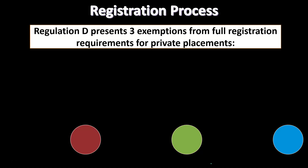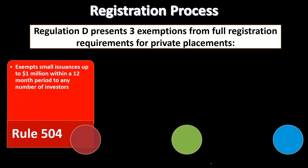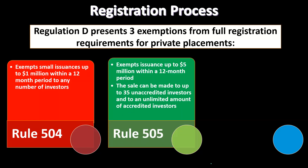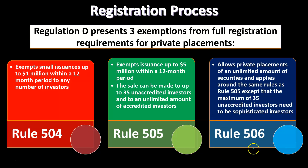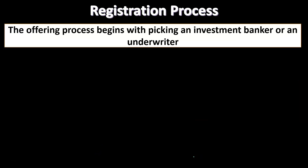Regulation D presents three exemptions from full registration requirements for private placements. Rule 504 exempts small issuances up to $1 million within a 12-month period to any number of investors. Rule 505 exempts issuances of up to $5 million within a 12-month period; the sale can be made to up to 35 unaccredited investors and an unlimited number of accredited investors. Rule 506 allows private placements of an unlimited amount of securities under similar rules as 505, except that the maximum of 35 unaccredited investors must be sophisticated investors.